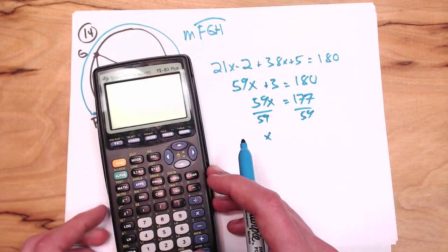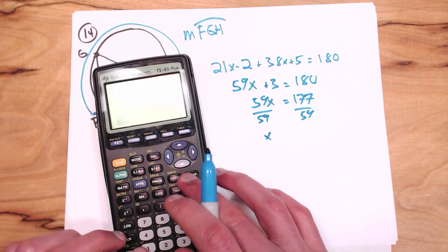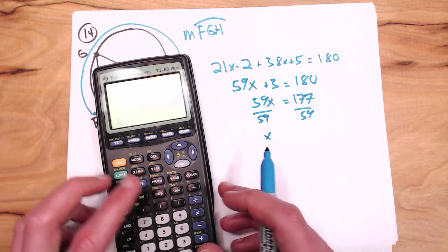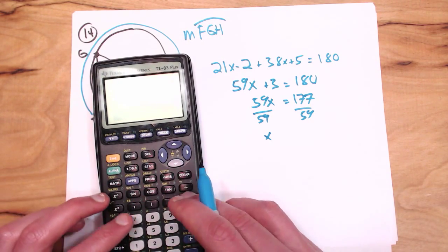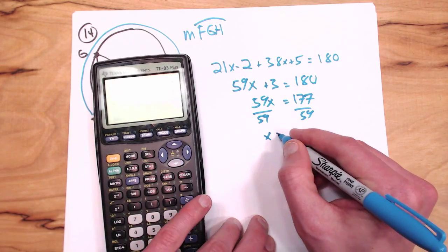And I believe I get, we'll do 177 divided by... excuse me, I did that backwards. We'll do 177 divided by 59, we get X equals 3.